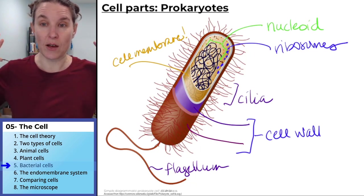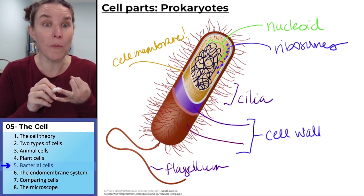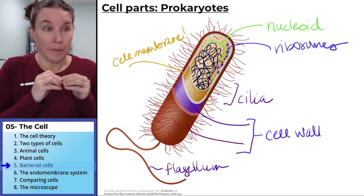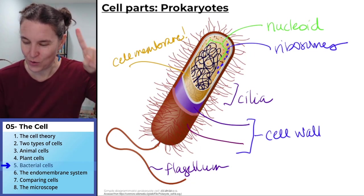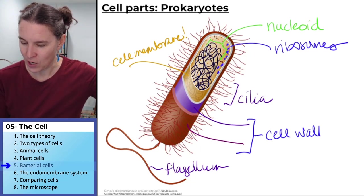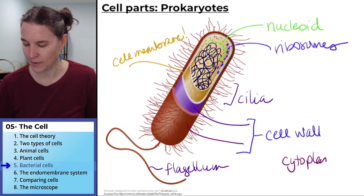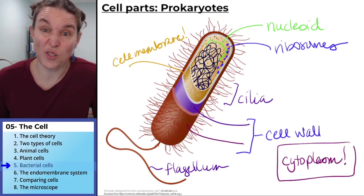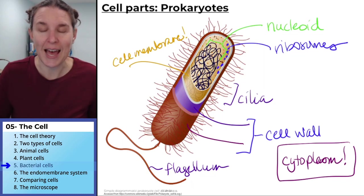There's no endoplasmic reticulum, no mitochondrion, no chloroplast. There's one thing I've forgotten on every single cell, and you get to know it here: cytoplasm. Cytoplasm is cell juice — the stuff inside the cell membrane that everything floats in.